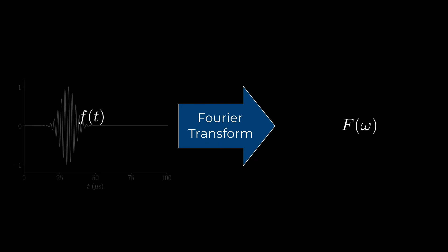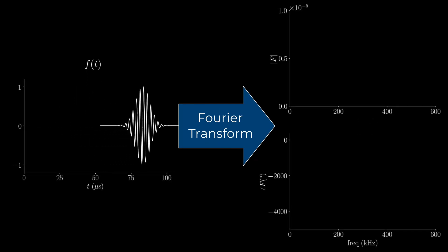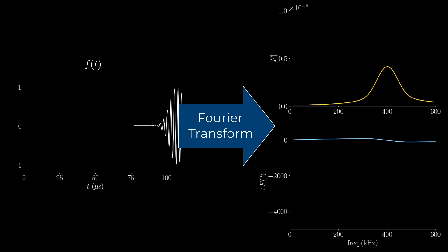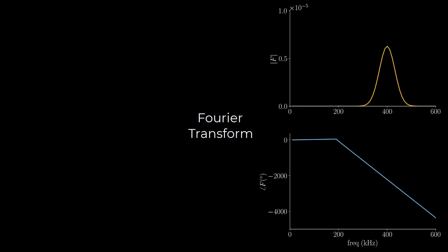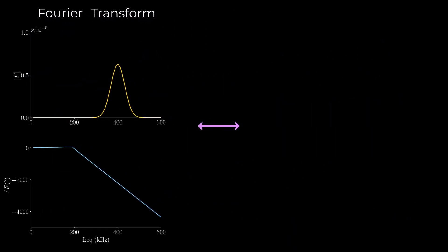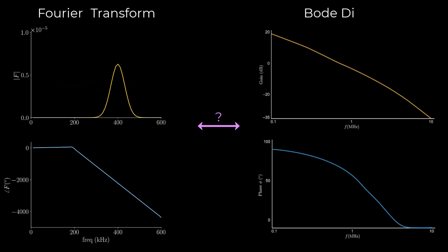If you're interested in Bode plots, you're probably already familiar with the Fourier transform. You can use a Fourier transform to calculate the frequency content of a signal. A common way to plot the frequency content of a signal is using magnitude and phase plots. But you might wonder, how are these different from the gain and phase plots of the Bode diagram?